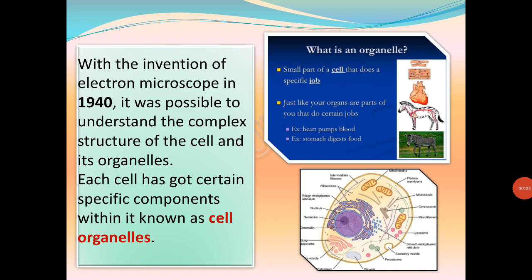All organisms are made up of cells. Single-celled organisms live on their own. With the invention of the electron microscope in 1940, it was possible to understand the complex structure of the cell and its organelles. Each cell has certain specific components within it known as cell organelles. In multicellular organisms there is division of labor — various organs perform different functions, and similarly each cell organelle performs a special function such as making new material or clearing waste. A cell is able to perform all its functions because of these organelles, which together constitute the basic unit of life.